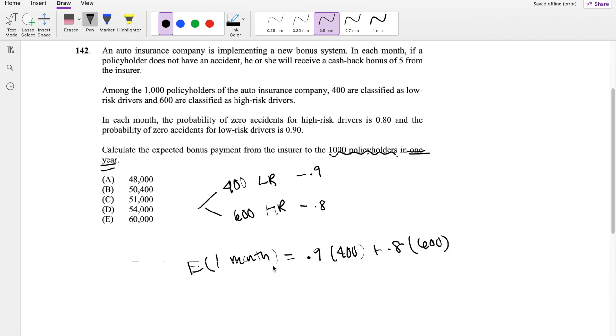So that's going to be the expected number of people. Let me write that out. Expected number of zero accidents in one month. So this is equal to 840.